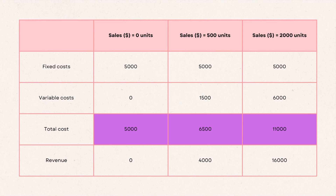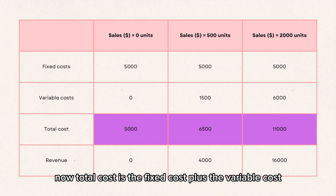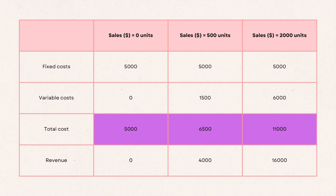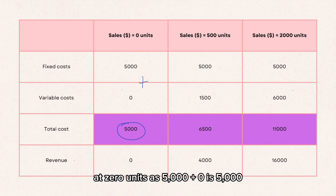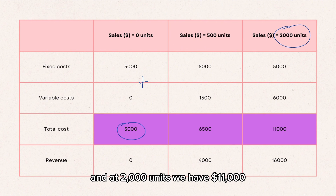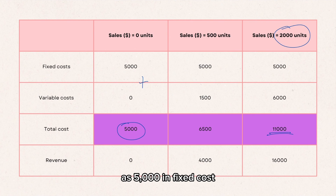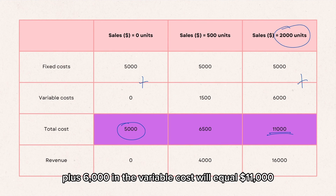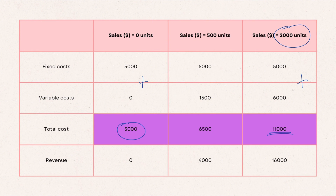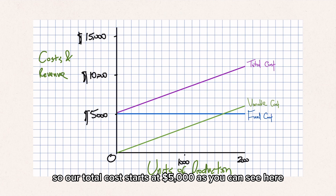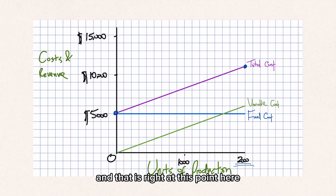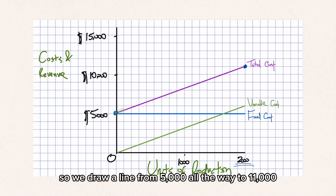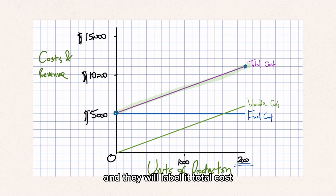Next we have our total cost — fixed cost plus variable cost. In this example, total cost at zero units is $5,000, as $5,000 plus zero is $5,000. And at 2,000 units we have $11,000, as $5,000 in fixed costs plus $6,000 in variable costs equals $11,000. So our total cost line starts at $5,000 and we draw it up to $11,000 at 2,000 units, and label it total cost.